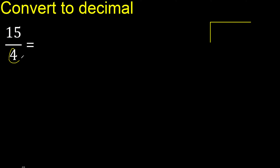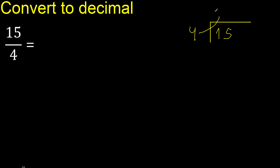15 divided by 4. 15 is not less than 4. 4 multiplied by which number is nearest to 15 but not greater? 4 multiplied by 4 is 16 — that is greater. 4 multiplied by 3 is 12 — ok, not greater. Subtract: the remainder is 3. There is no number that goes down, so we continue.